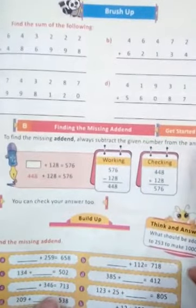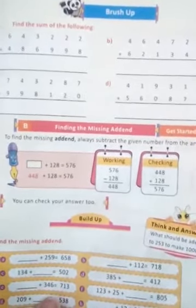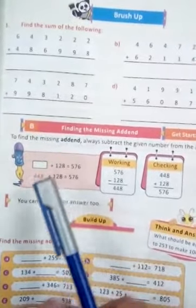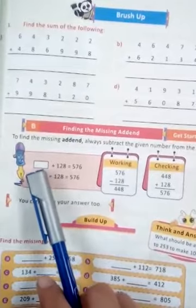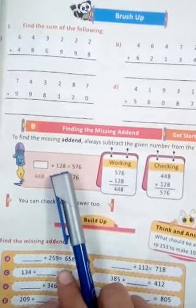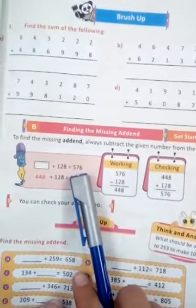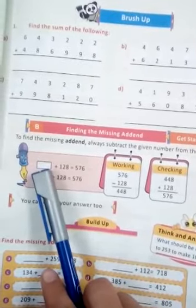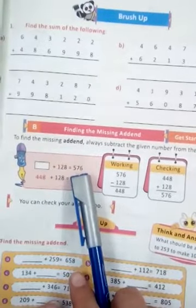We have to find the missing addend. Now here is an example in front of you. Here the first addend is missing. We have the second number's addend and a sum here. So how do we find the missing addend?